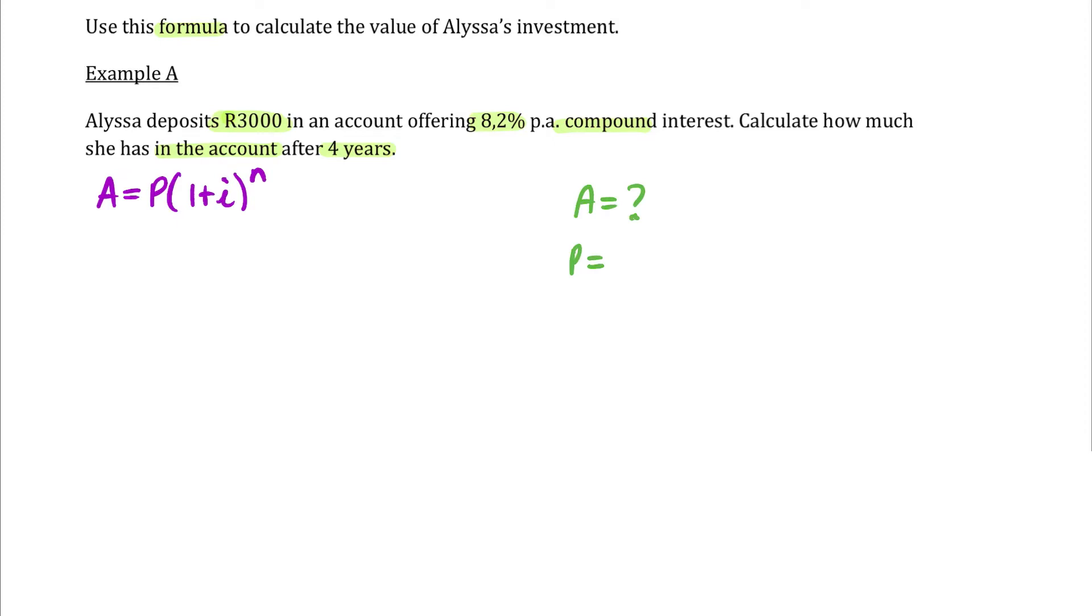P represents the initial investment, which in this case, was 3000 Rand. The interest rate is 8.2 over 100, which we can write in its decimal form as 0.082. Remember the zero here.